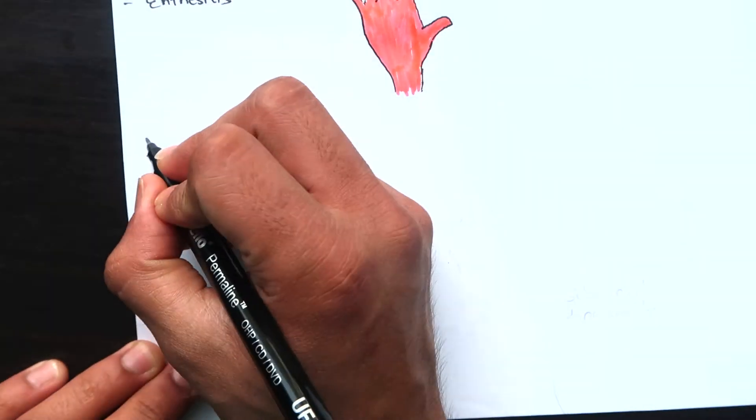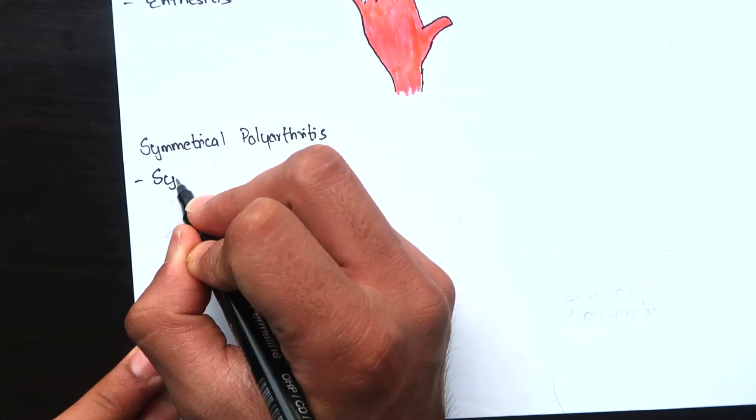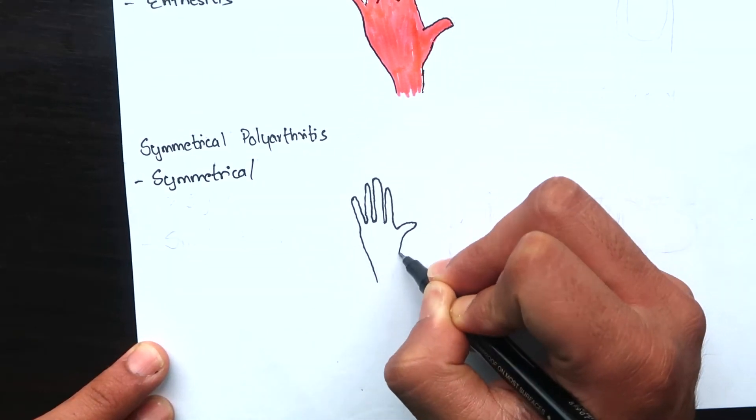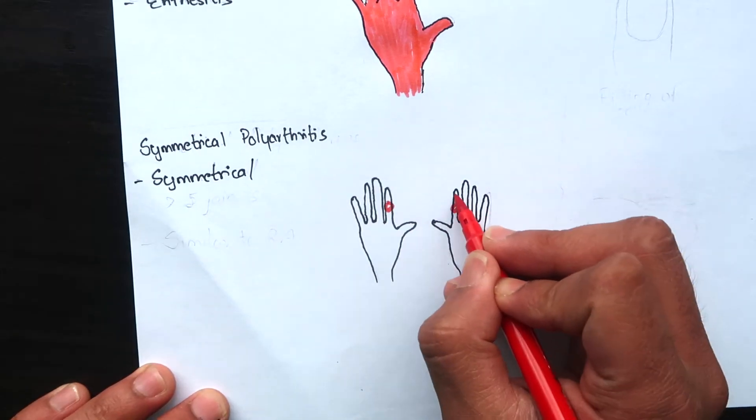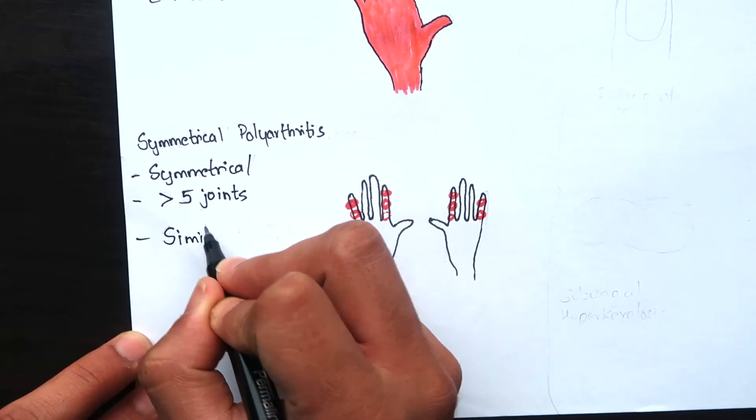Next one is symmetrical polyarthritis. It occurs in about 25% of the cases with more than five joints involved. There is symmetrical involvement of small and large joints in both upper and lower limbs and its features are somewhat similar to that of rheumatoid arthritis.